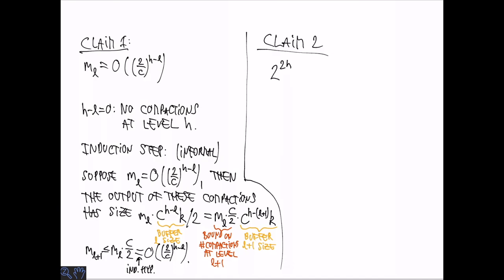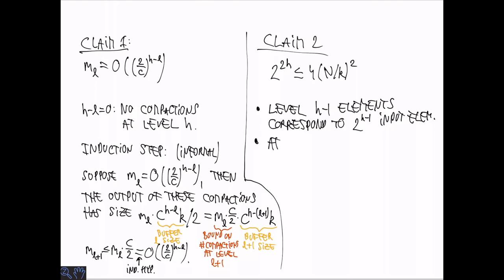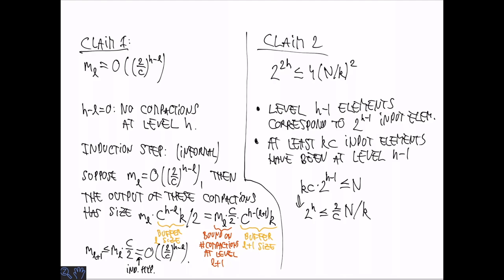Finally, let's look at claim number 2. So we claim that 2 to the 2H is upper bounded by 4 times N over K squared. There are two facts we need to show this. First of all, at level H minus 1, each element corresponds to 2 to the H minus 1 input elements. Also, we know that at least K times C input elements have been at level H minus 1 because it was full at some time and we made a compaction and created level H. Using these two facts together, we get that Kc times 2H minus 1 must be at most N. And this implies, in a couple of steps, that 2 to the 2H is at most 16 times N over K squared. So here the constant 16 is not what was promised, but it can be improved to 4. You can see the book for details.